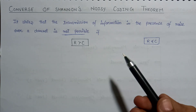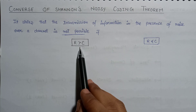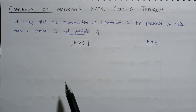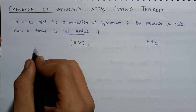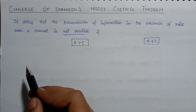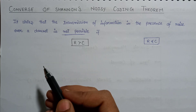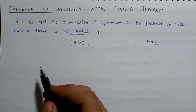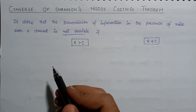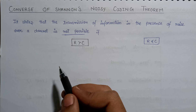This is all about Shannon's Noisy Coding Theorem and its converse. Now, in order to get errorless transmission, error detection and correction codes should be added.